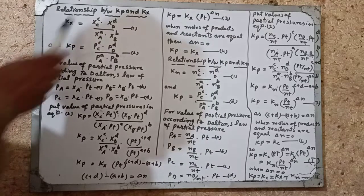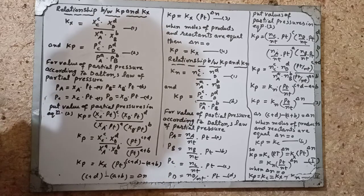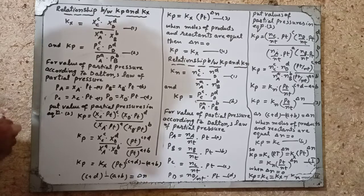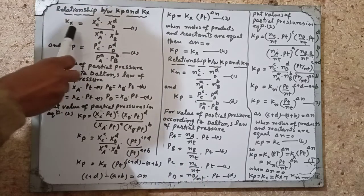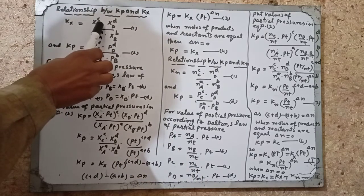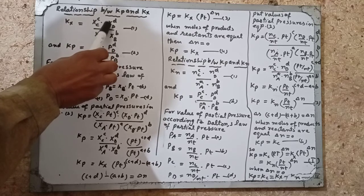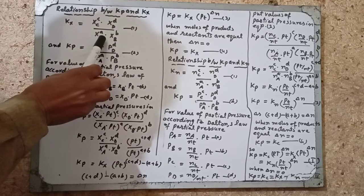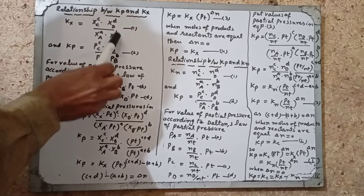Today we are studying the relationship between Kp and Kx. Kp is the equilibrium constant when concentration of reactants and products is expressed in terms of partial pressure, and Kx is the equilibrium constant when concentration of reactants and products is expressed in mole fraction. X is the symbol of mole fraction. Kx equals the mole fraction of product C raised to c, and mole fraction of product D raised to d, divided by mole fraction of reactant A raised to a and mole fraction of reactant B raised to b.